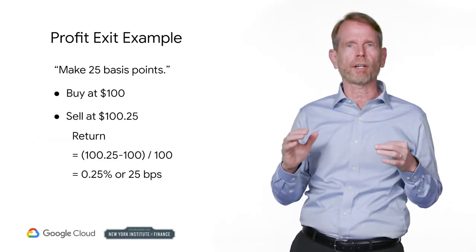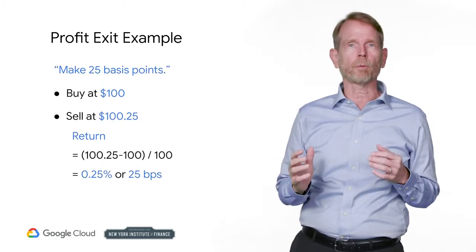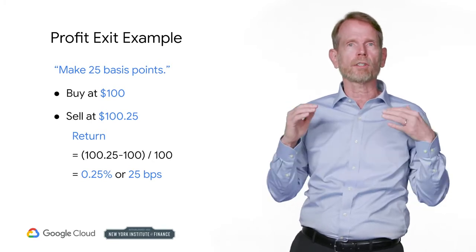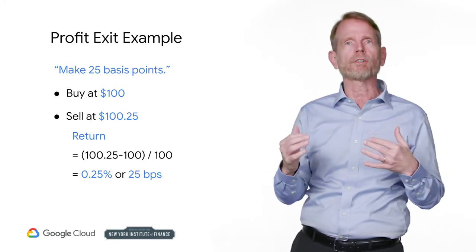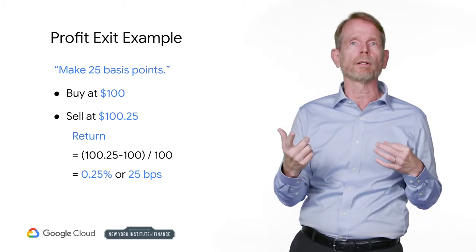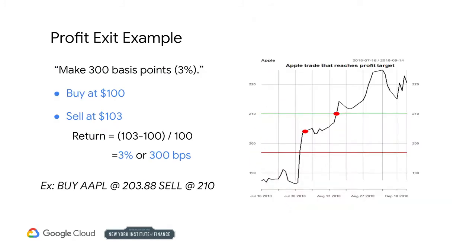Let's start by looking at an example of a profit exit: make 25 basis points. Recall that 100 basis points equals 1%, so you want to make a 0.25% return. Suppose you bought at 100 — your trading objective is to sell at 100.25. Here's another example: buy at 100, sell at 103 for a 3% profit — you make 300 basis points.